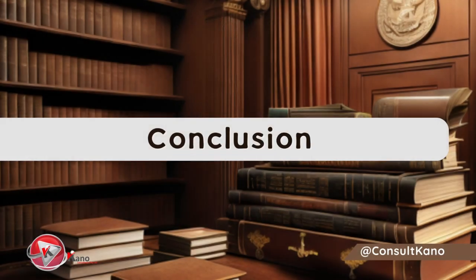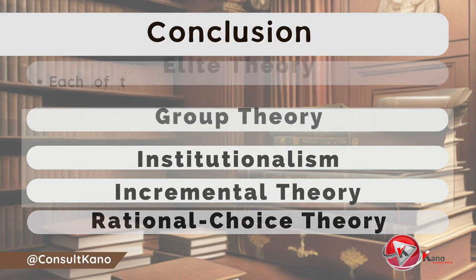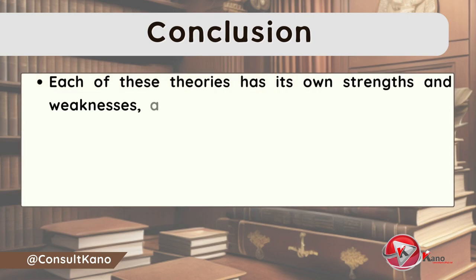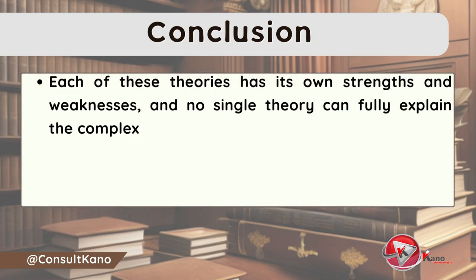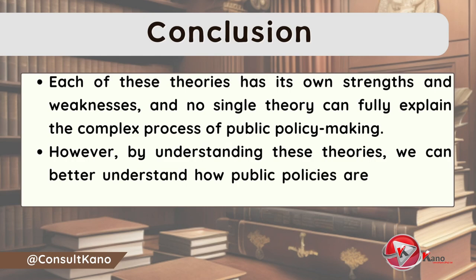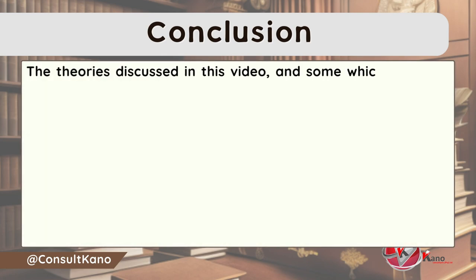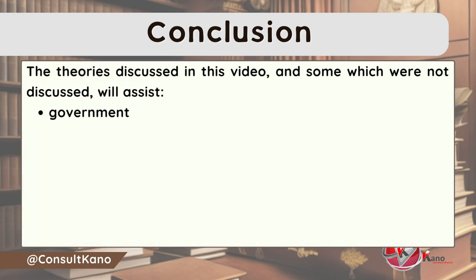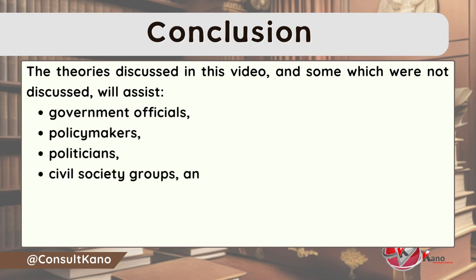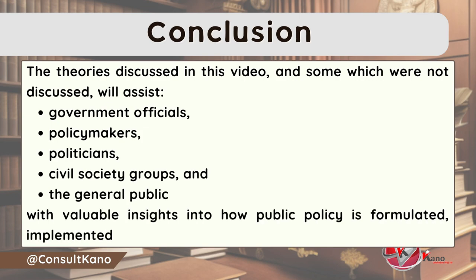In conclusion, these are just a few of the many theories that can be applied to public policy. The most appropriate theory for a particular policy will depend on the specific circumstances of that policy. Each of these theories has its own strengths and weaknesses, and no single theory can fully explain the complex process of public policy making. However, by understanding these theories, we can better understand how public policies are made and how they can be changed. These theories will assist government officials, policymakers, politicians, civil society groups, and the general public with valuable insights into how public policy is formulated, implemented, and evaluated.